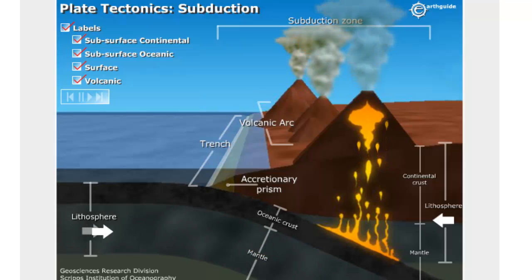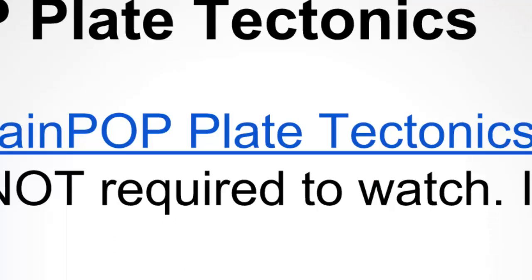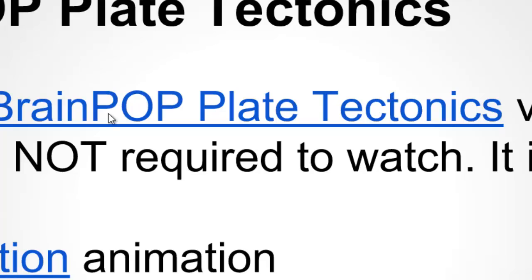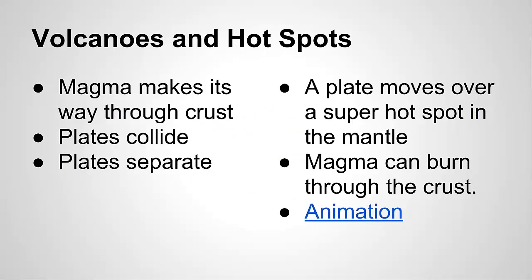Magma can then be forced up to form volcanic mountains. Volcanoes can also form when plates separate, with magma slowly rising up to fill the cracks in the ocean or on land, what we call rifts.